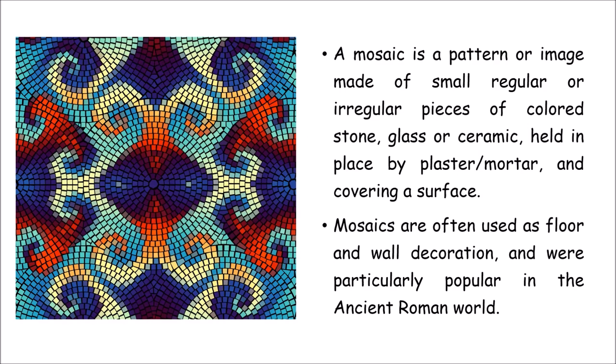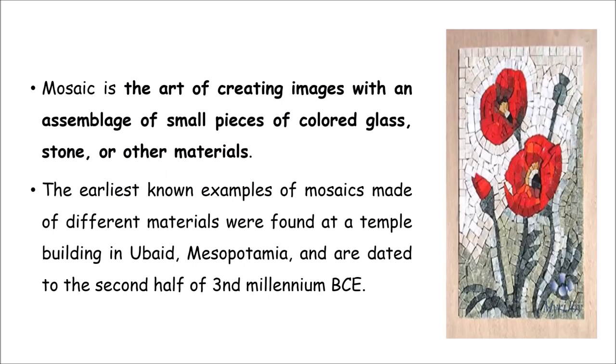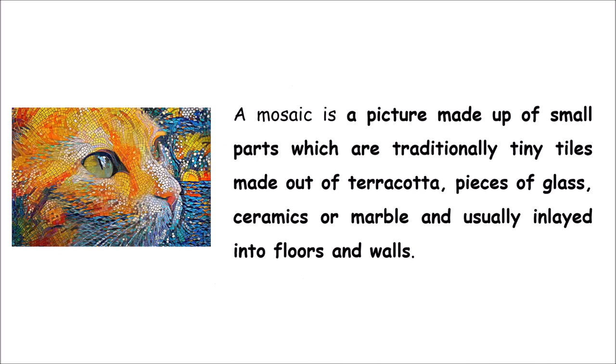Mosaics are generally done on the floor or wall as decoration, and they were particularly popular in the ancient Roman world. Mosaic art is created from an assemblage of small pieces of colored glass, stone, or other materials. The earliest known examples of mosaics made from different materials were found in a temple building in Mesopotamia, dated to the second half of the third millennium BC.